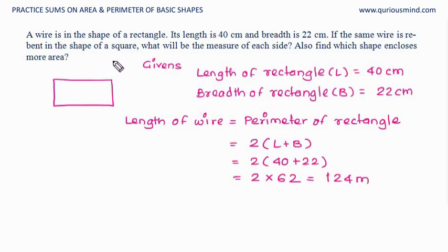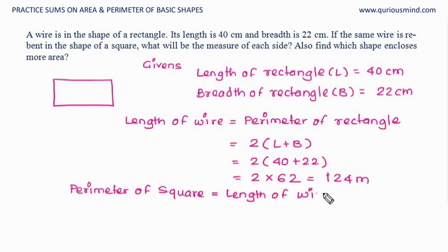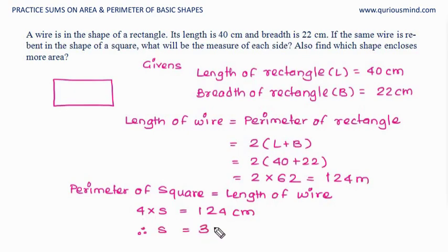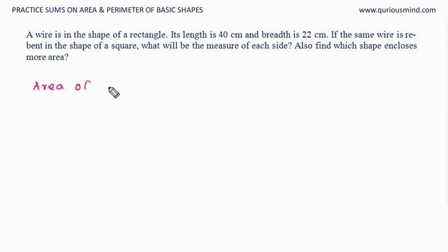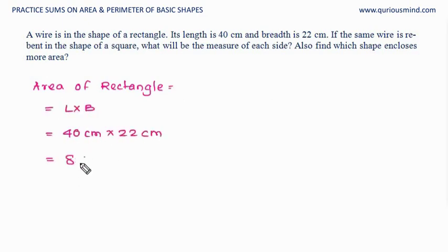This wire is rebent into a square, which means the square's perimeter equals the length of the wire. Square's perimeter is 4 into side, and the length of wire is 124 centimeters. Therefore, side of the square is 124 divided by 4, which is 31 centimeters. Now that we know the side of the square, we can find the areas. Area of the rectangle is 22 into 40, which is 880 centimeter square.